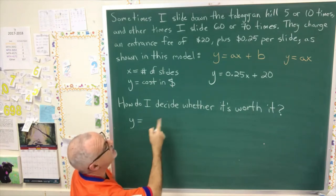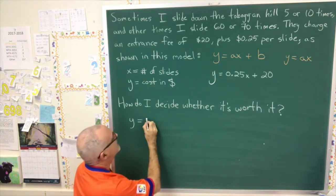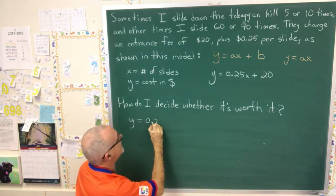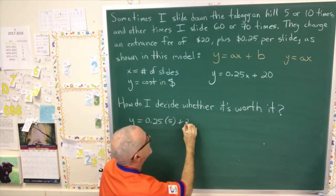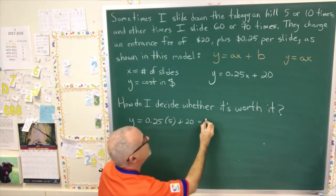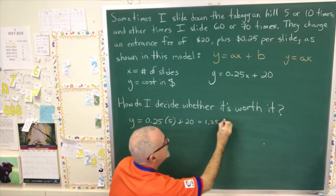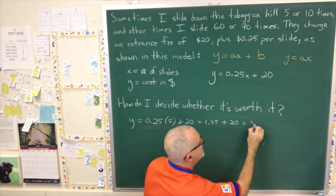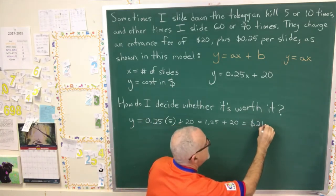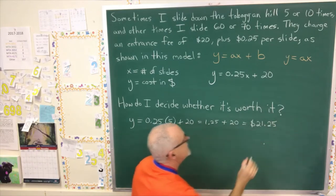So, it's going to be, in the first use of the model, y equals 0.25 times 5 slides plus 20. And that gives me 1.25 plus 20, which is a cost of $21.25.